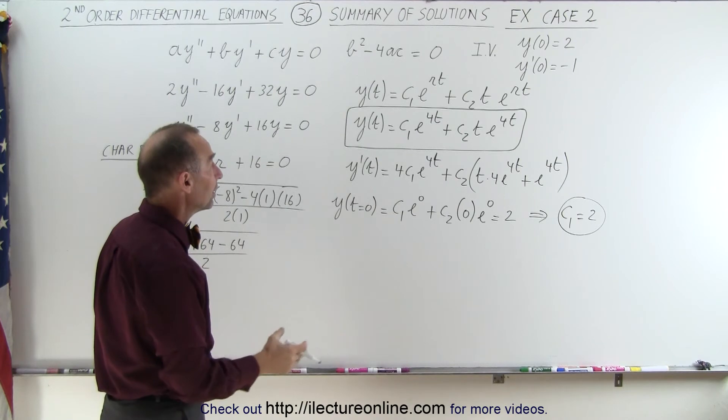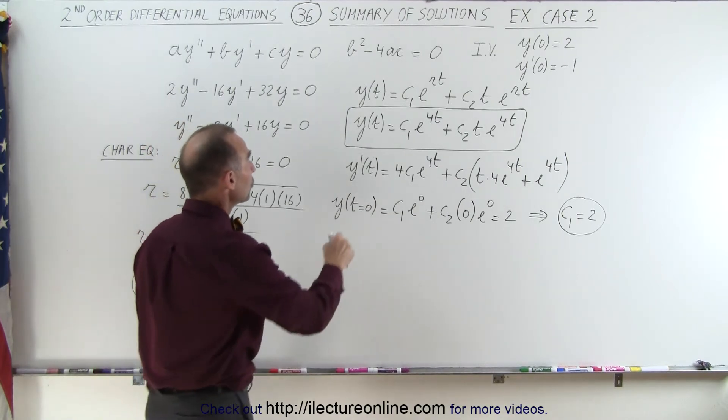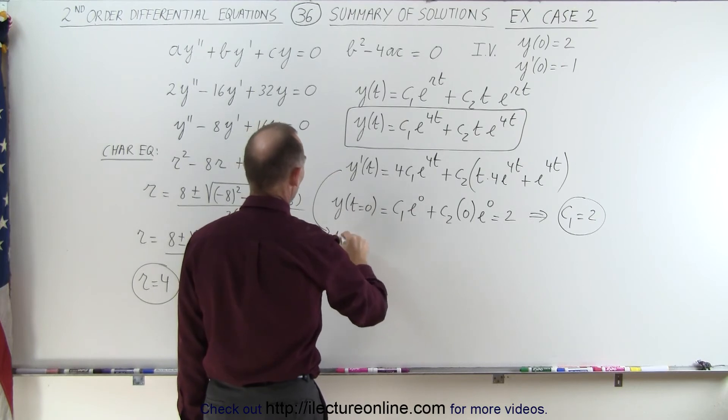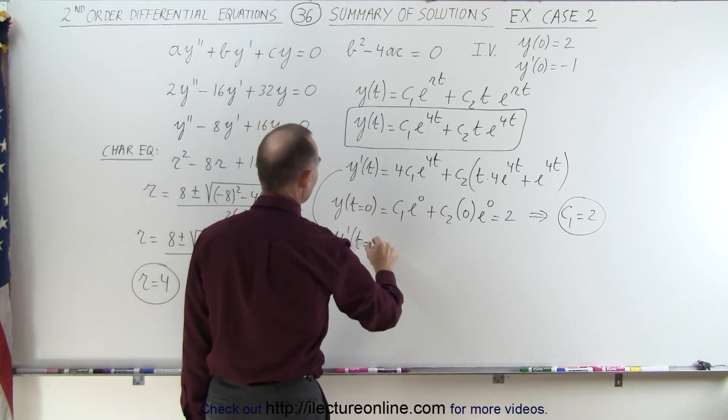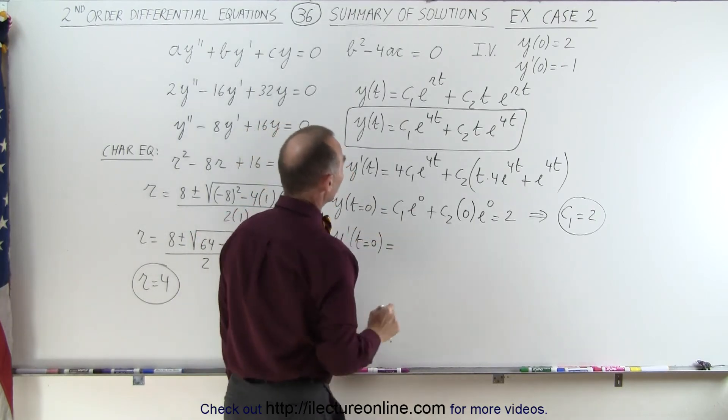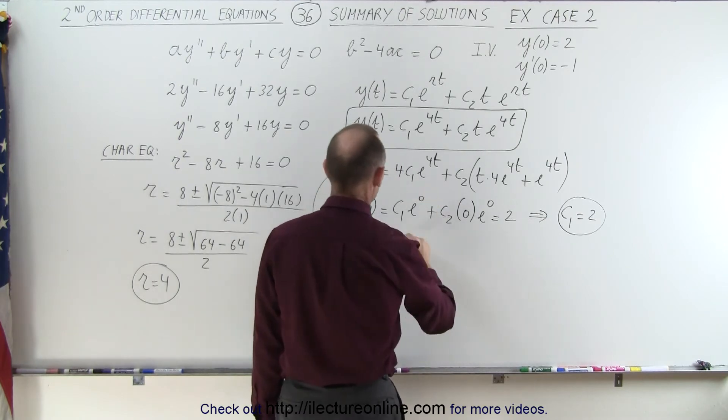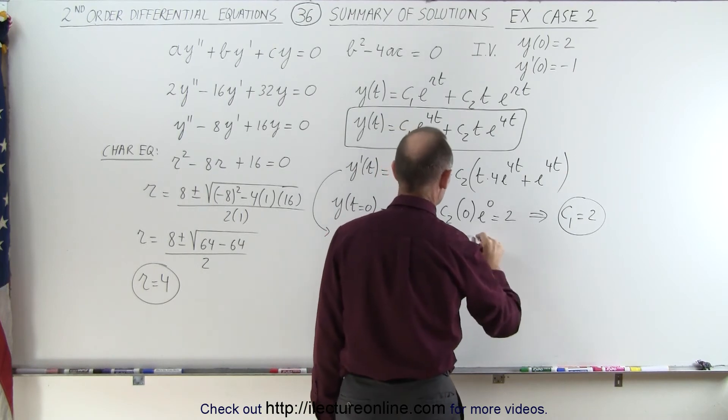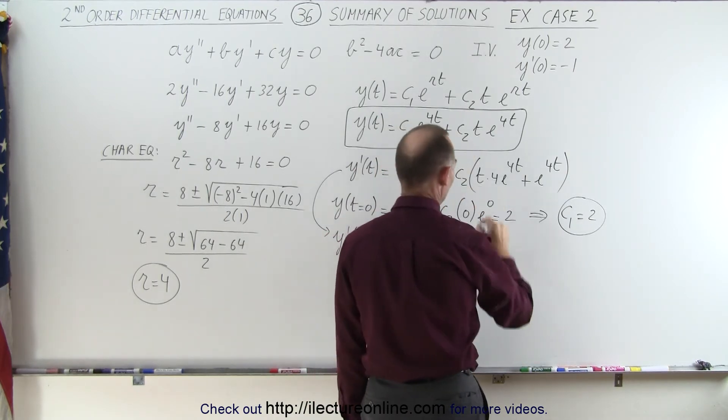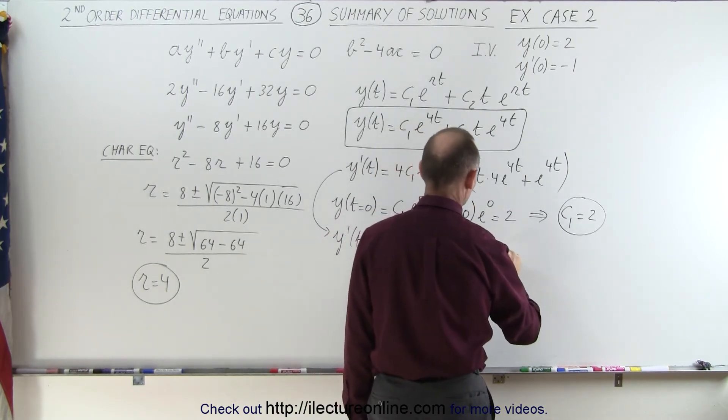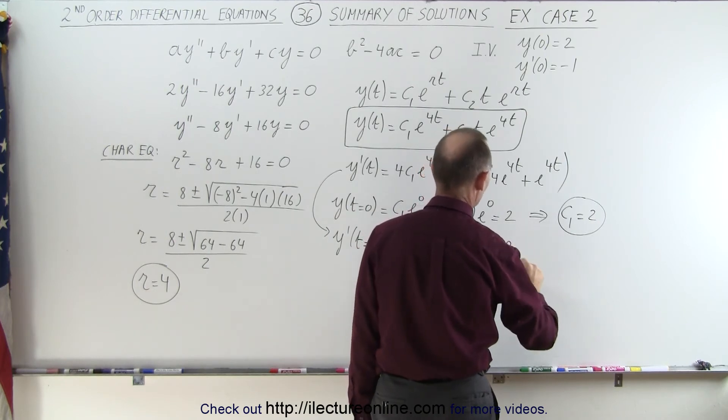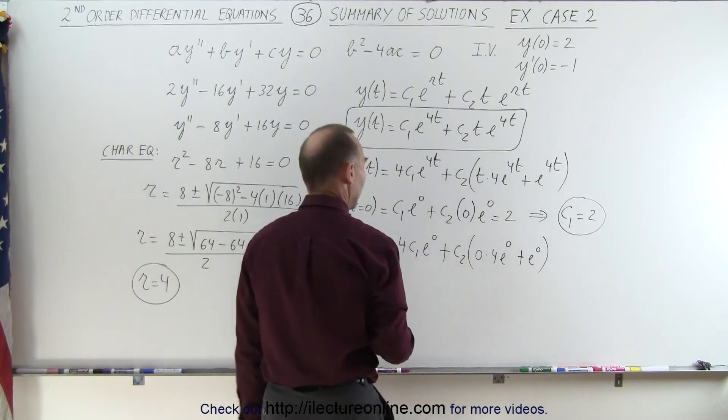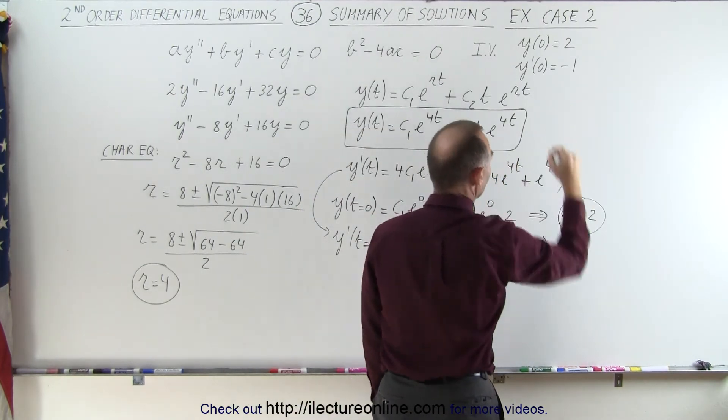Now to find the other constant c2, we're going to use y prime evaluated at t equals 0. So we have y prime when t is equal to 0 is equal to 4c1 e to the 0 plus c2 times, well, this will become 0 times 4 e to the 0 plus e to the 0, and that is equal to negative 1.